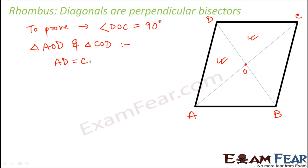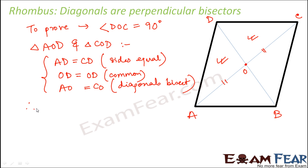In these two triangles we find that AD is equal to CD because in rhombus we have equal sides. Next we have OD is equal to OD which is a common side. We also have AO is equal to CO, that's because the diagonals bisect each other which is a property of parallelogram. So considering these three points we can say that triangle AOD is congruent with triangle COD by SSS congruency.